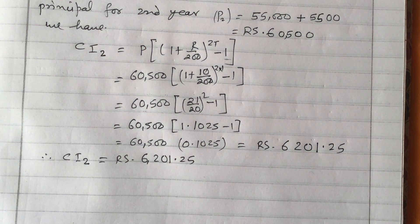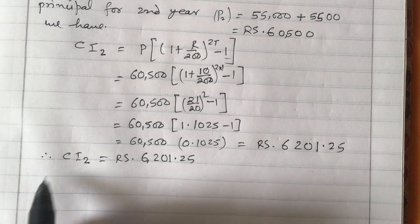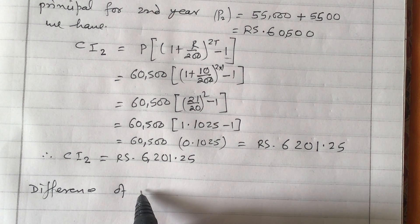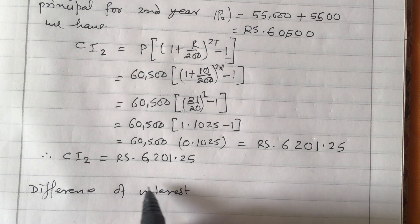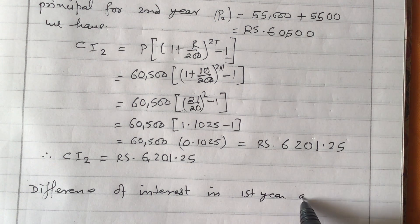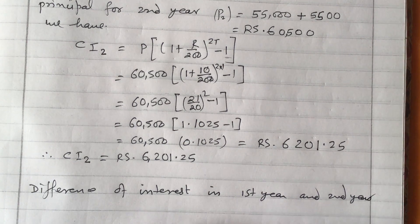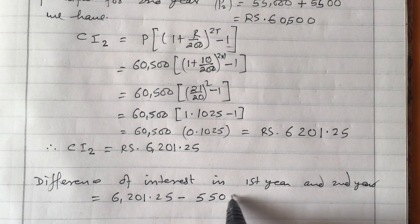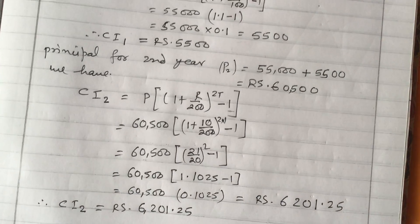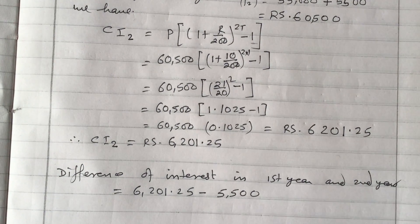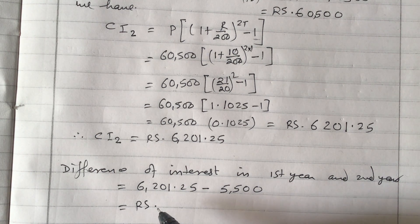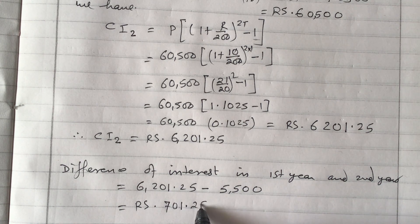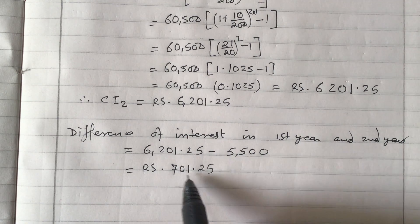Now, we need to find the percentage difference as asked in the question. The difference between the interest of the second year and the first year is: 6,201.25 − 5,500 = Rs 701.25. This is the difference between the interest of the first year and the second year.